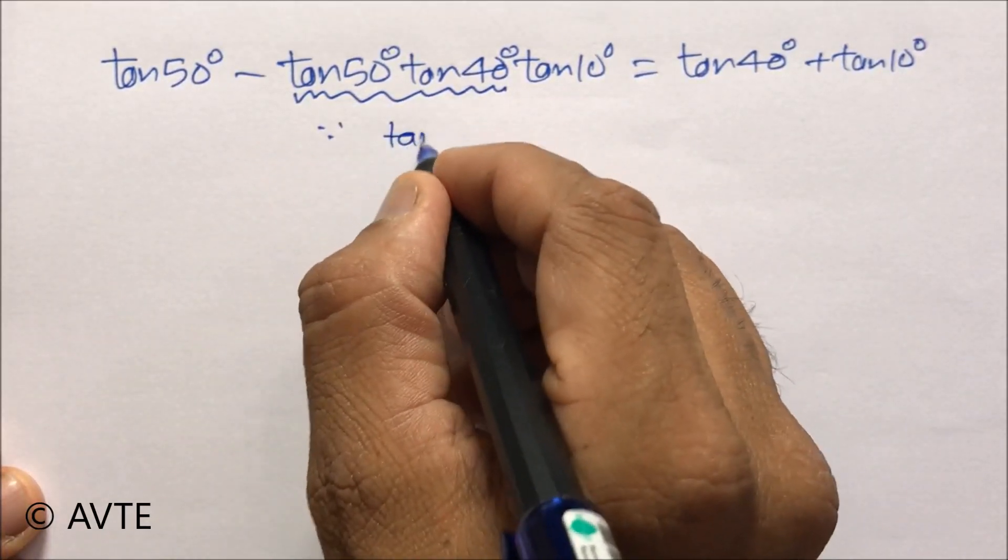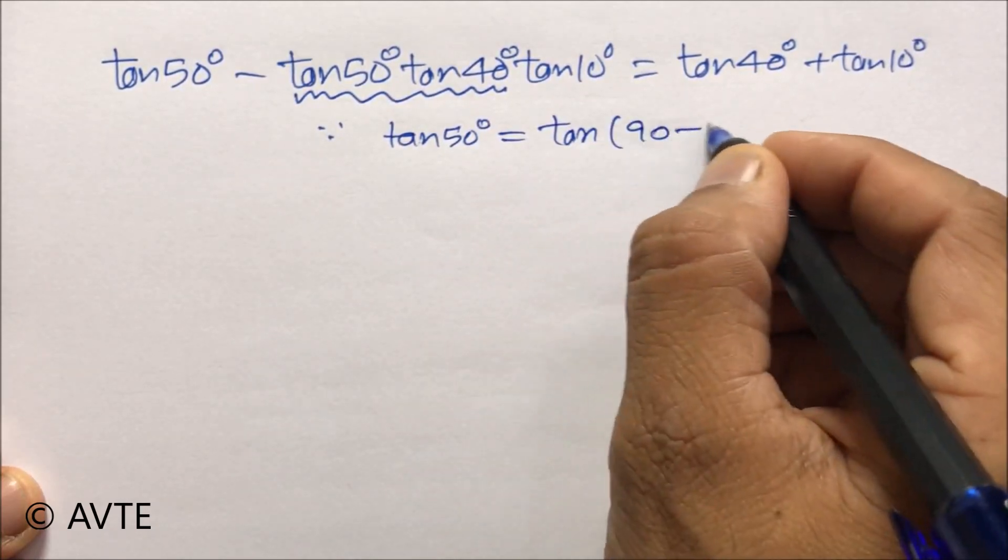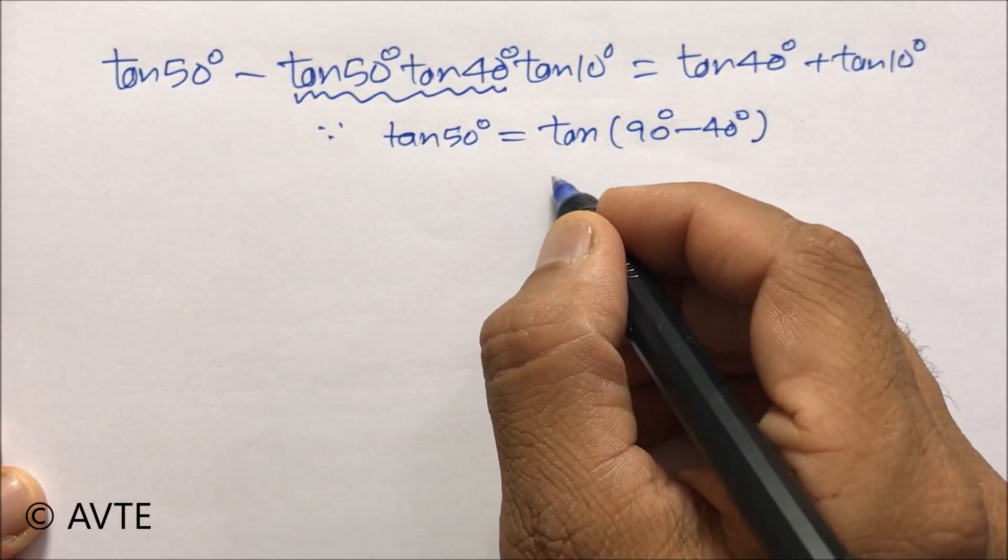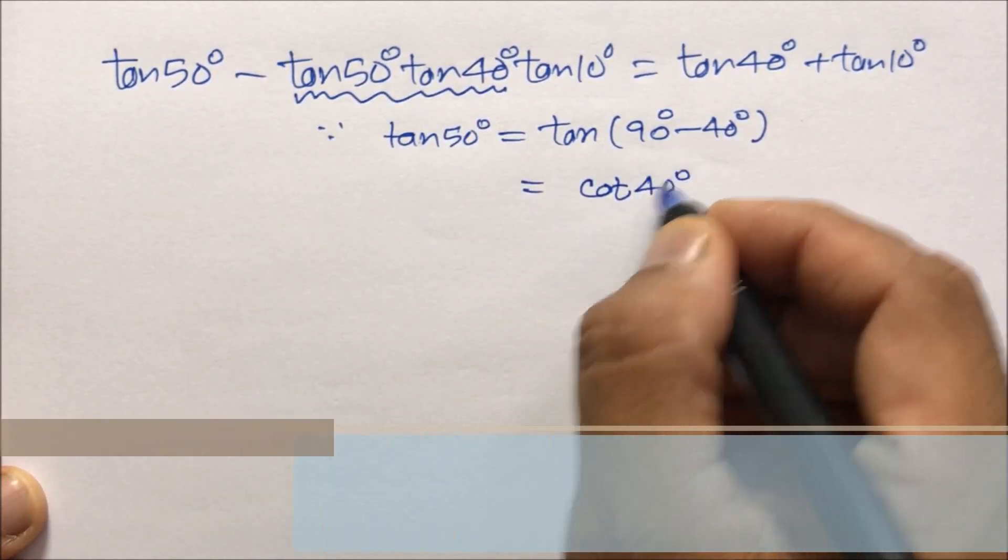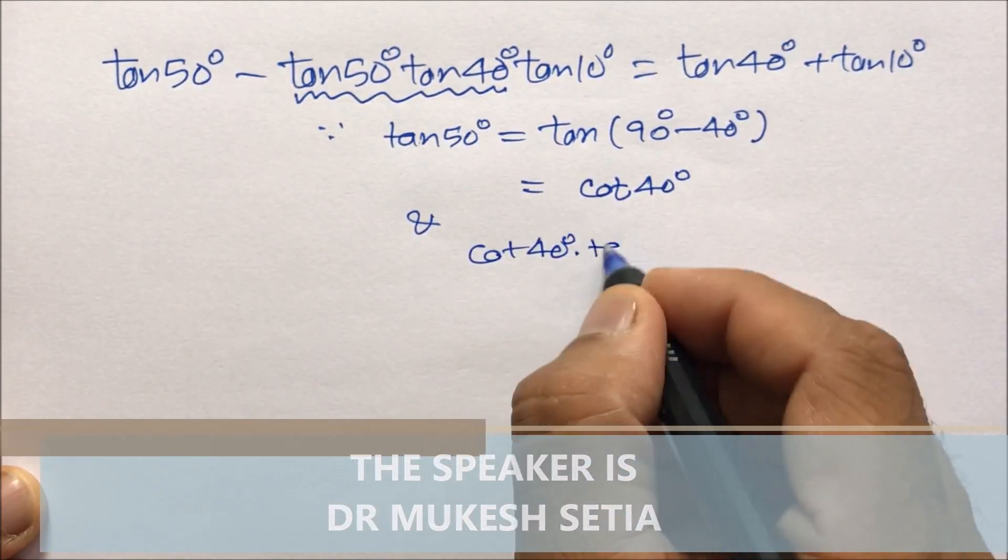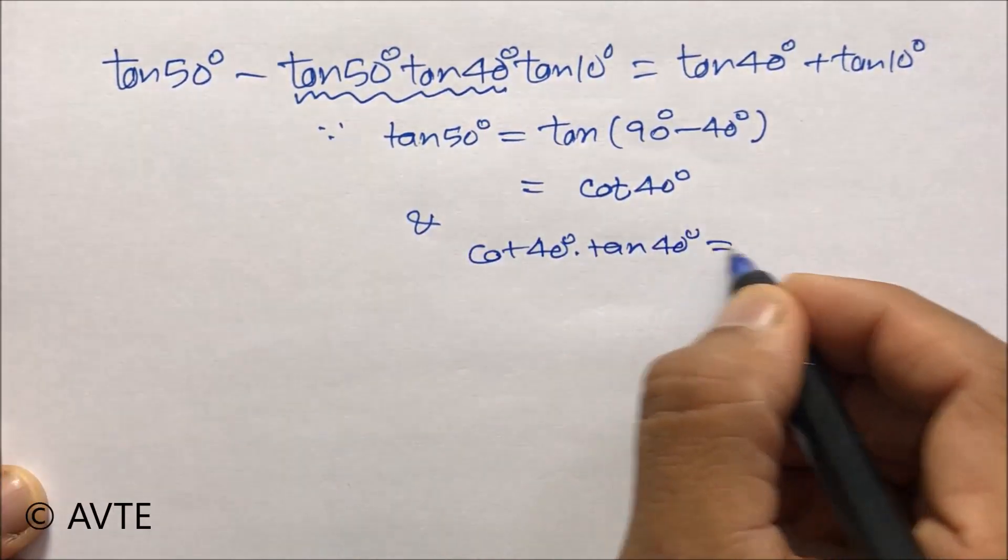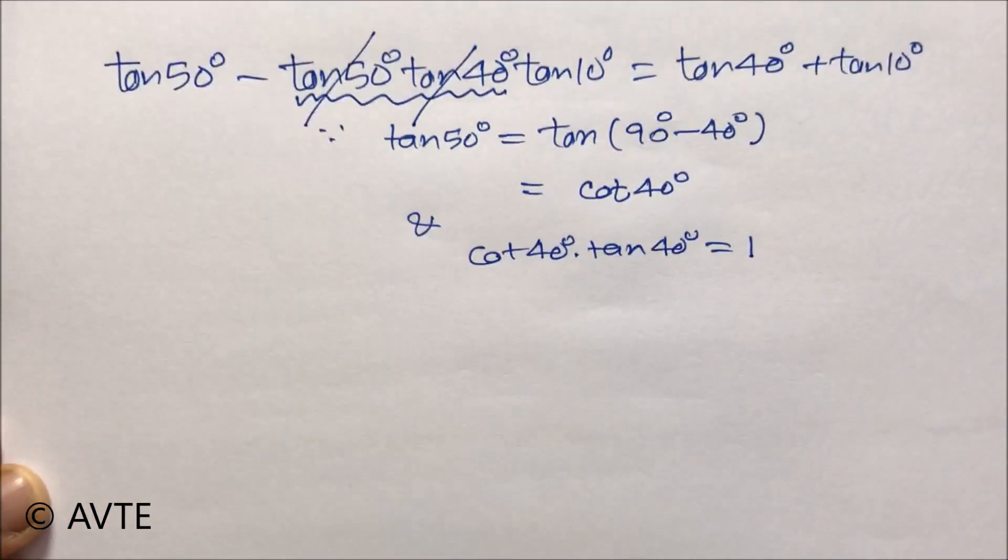Because tan 50 degrees can be taken as tan of 90 minus 40 degrees, by using a complementary angle one can write that as cot 40 degrees. And cot 40 degrees into tan 40 degrees is 1, so these two terms will get cancelled and this will be converted to 1.